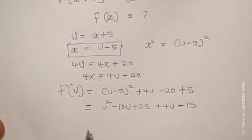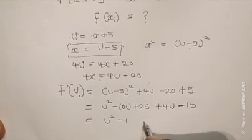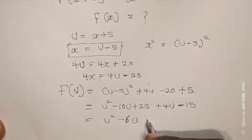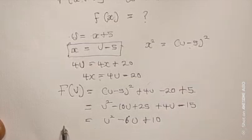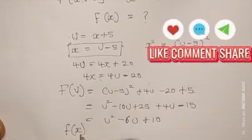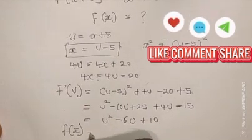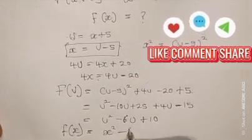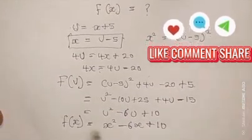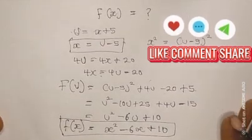So we have u² minus 6u plus 10. Now substituting back — replacing u with x — we get the function f(x) = x² minus 6x plus 10. Please don't forget to like, share, and subscribe to my channel. Thank you!